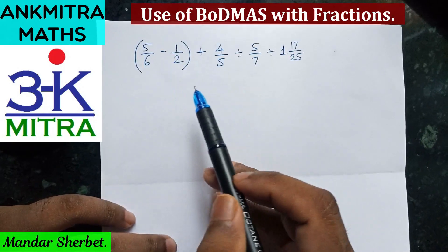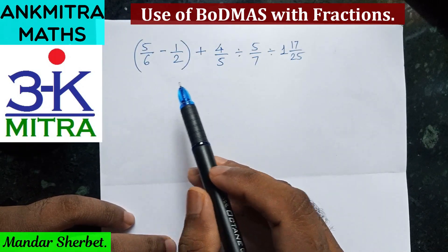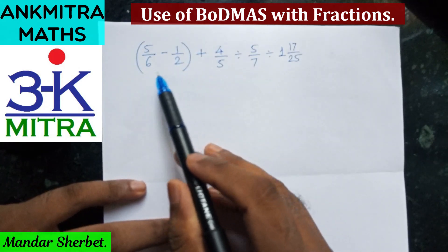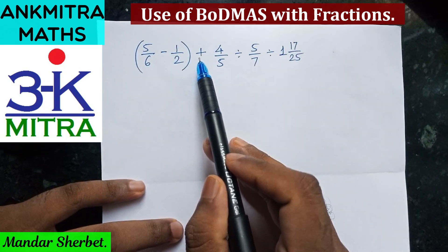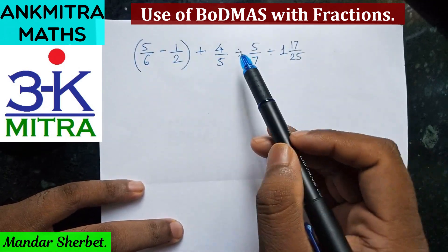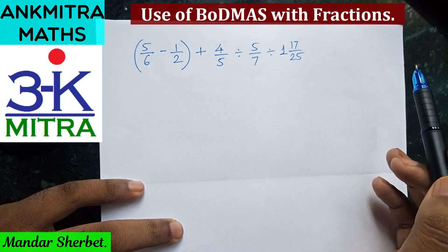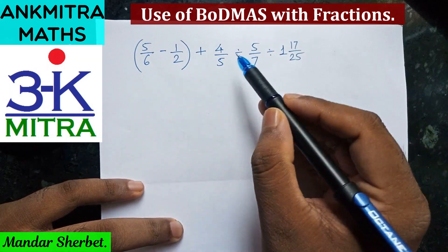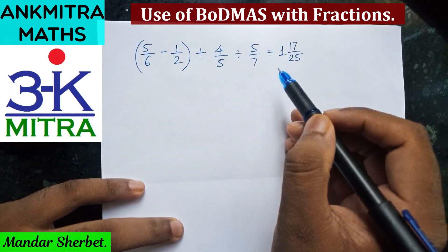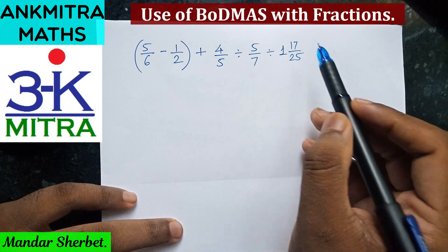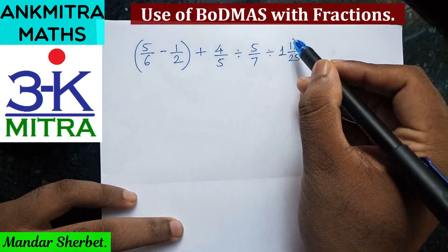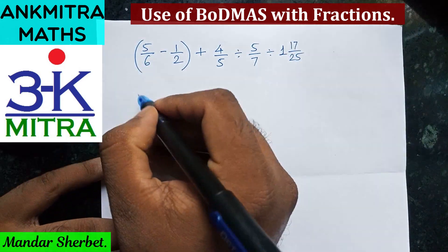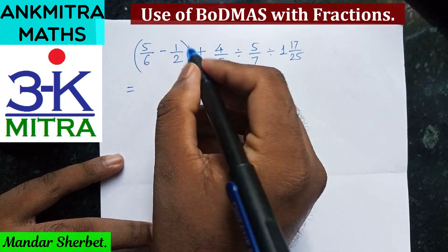In this question, first we need to decide which part of the sum to solve first. We have a bracket with two fractions inside it, then an addition calculation, and then division calculations. As per BODMAS rule, we need to solve the bracket first. These divisions can be solved together in the first step. So we'll start with the bracket and simplify the mixed fraction into a simple fraction.